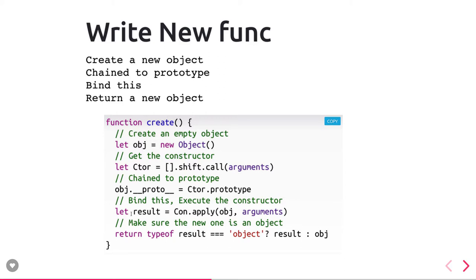The new keyword creates an object, chains to the prototype, binds the object to this, and returns a new object. Here we're trying to create that scenario with the create method: create a new object, get the constructor, assign the prototype from the constructor's prototype, pass all the arguments to that object, and return that object.